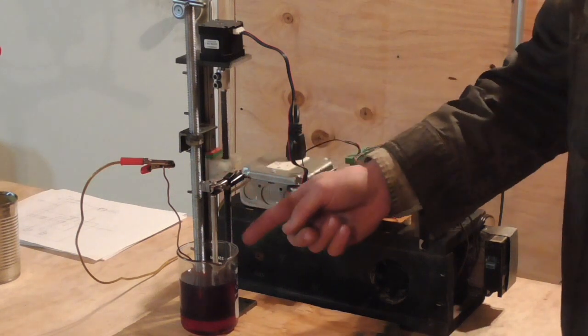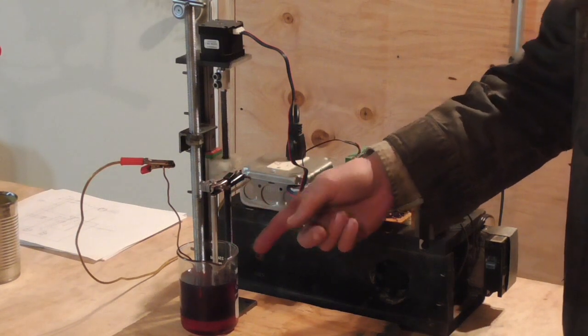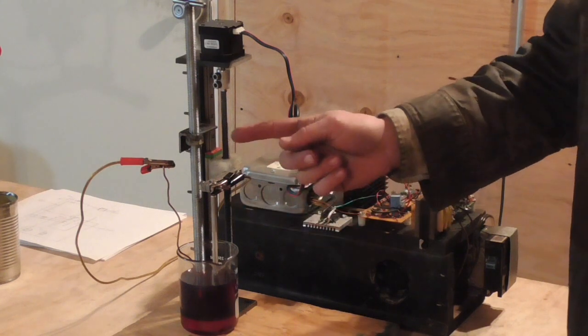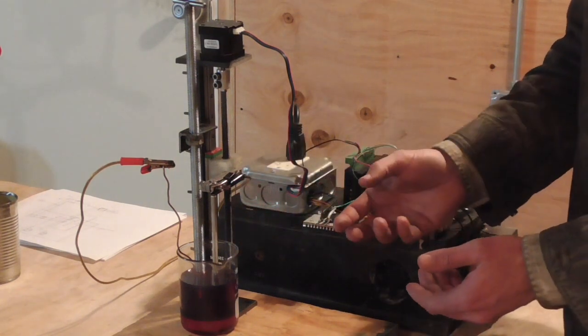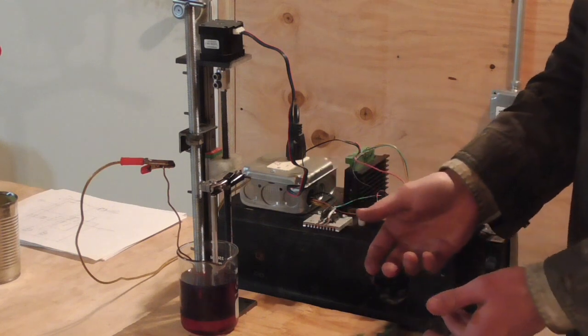This screw here is just a clamp that holds the workpiece in place. And then I've got a lead screw to feed the electrode up and down. This is just a single axis, basically a die sinking EDM machine.